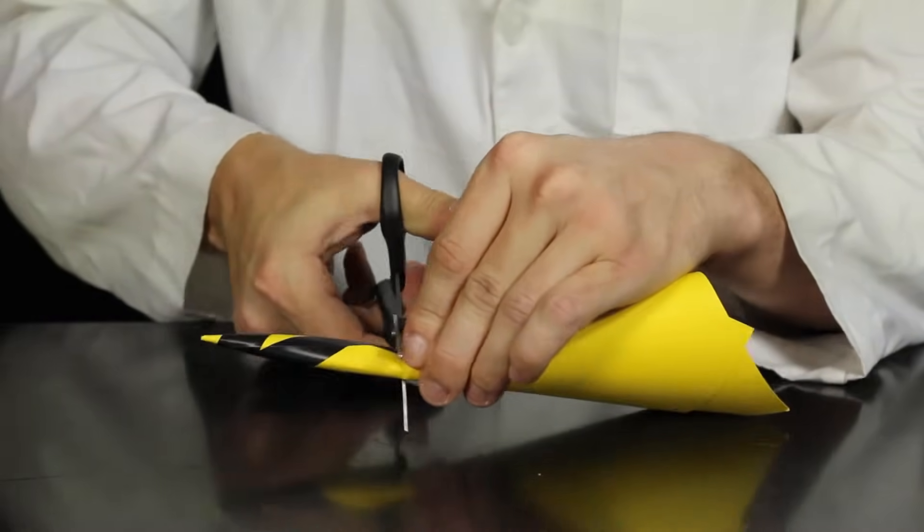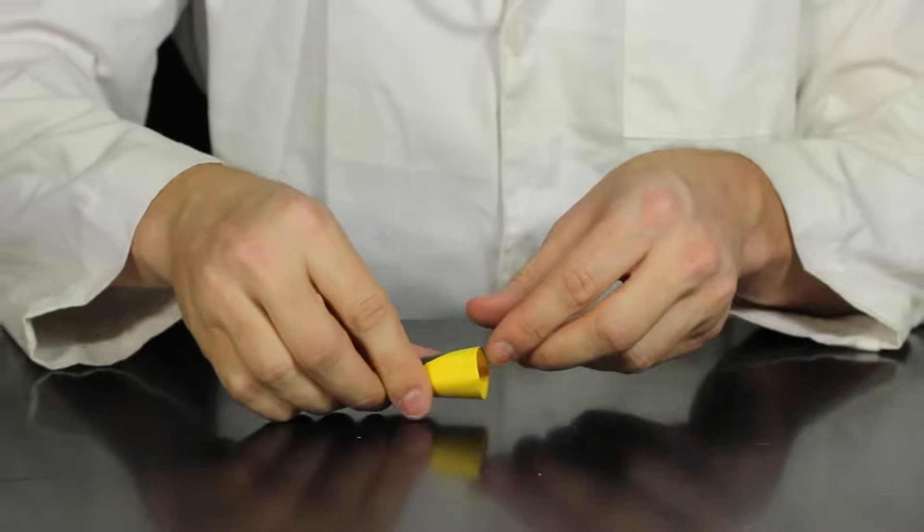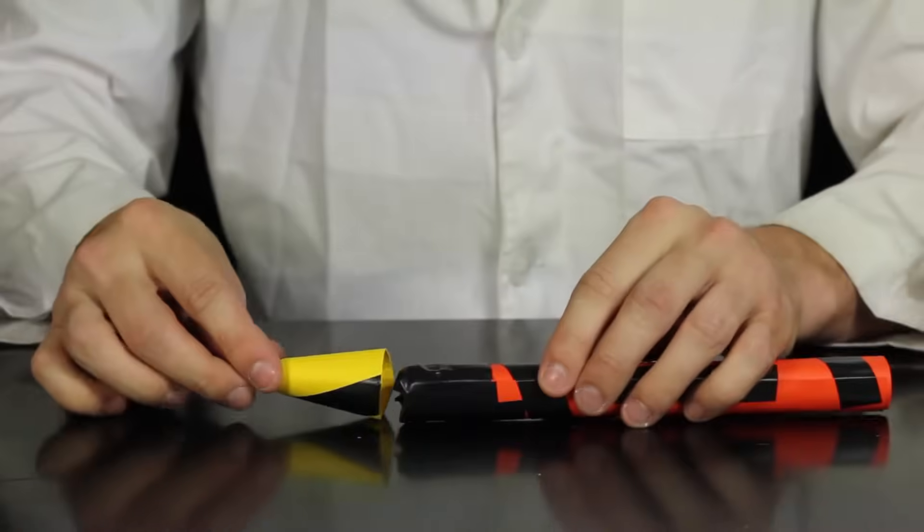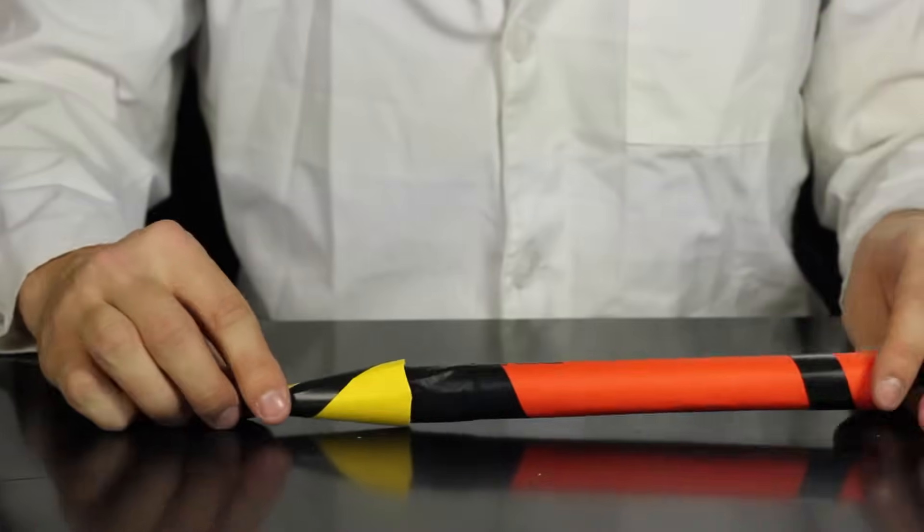Once you have the nose cone cut to size, you can trim up the edges so that there's a nice fit between the body of your rocket and the nose cone. Then tape the nose cone in place.